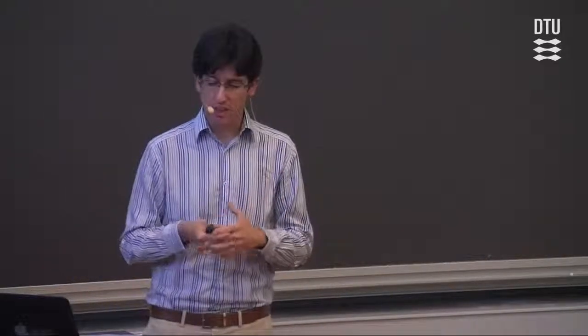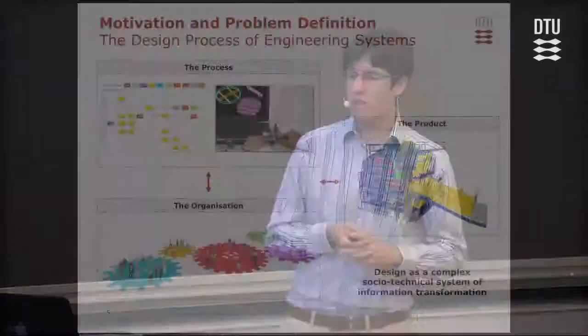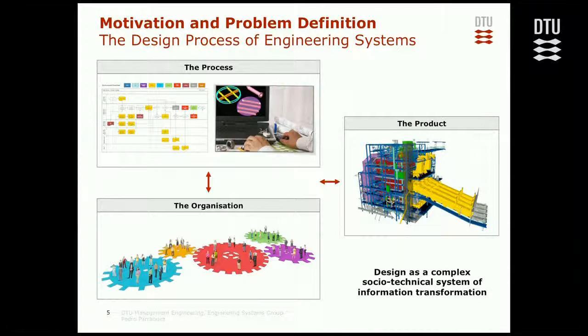This makes us think that examining the design process of engineering systems is paramount — in particular, the people and how they shape and implement complex design processes. To understand these complex projects, we can think about three domains: the process domain, where we see activities and tasks and their interdependencies; the organization domain, where we see people implementing those design processes and their different attributes and departments; and the product, which is itself quite a large, complex system.